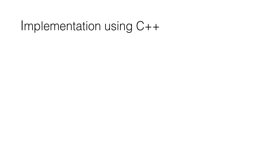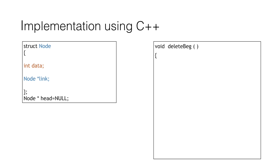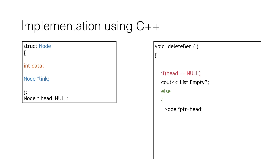Now let's implement this using C++. This is the basic structure of our node. Then we start our function to delete the node from the beginning. Before we move forward we need to take care of one condition: if the linked list is empty, that is head is equal to null, then we simply print that the list is empty and we cannot delete any node from it.